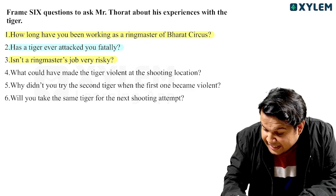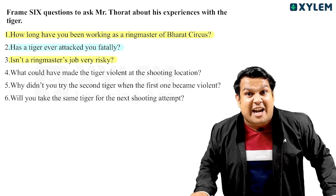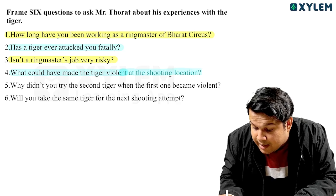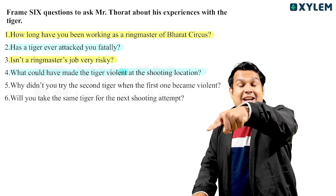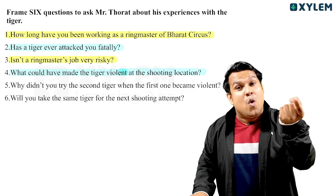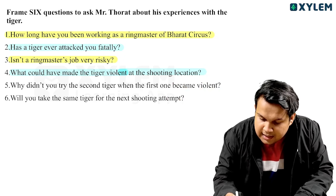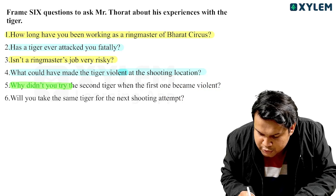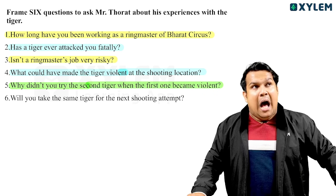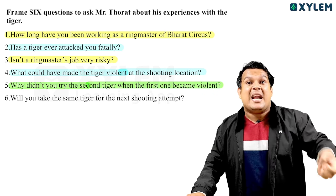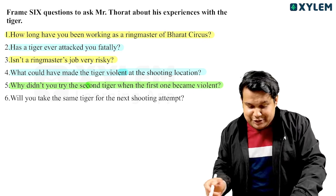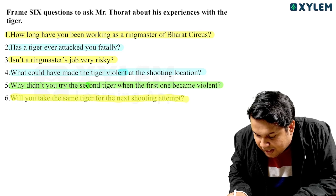Question number three: Isn't a ringmaster's job very risky? Question number four: What could have made the tiger violent at the shooting location? And the second last question: Why didn't you try the second tiger when the first one became violent? Will you take the same tiger for the next shooting attempt?